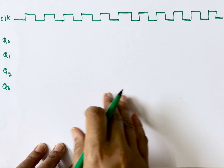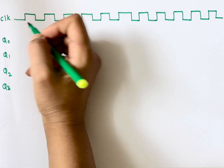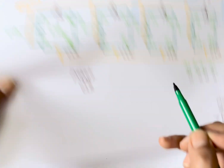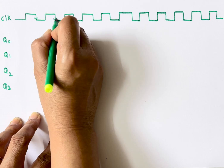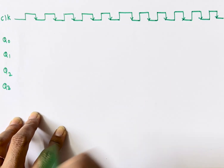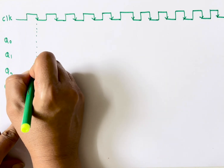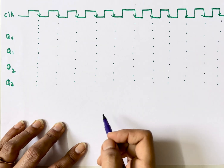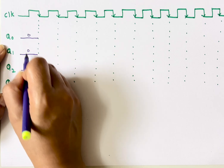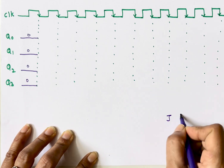Now let's look at the timing diagram, which shows how the output changes based on the input. A counter counts the number of clock pulses. This is a negative-edge-triggered flip-flop — the arrow indicates the edge and the bubble indicates negative edge. So the output will change at every negative edge, which is the falling edge (1 to 0 transition). We have four outputs: Q0, Q1, Q2, and Q3.